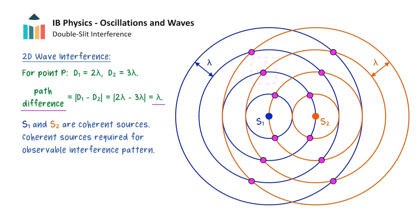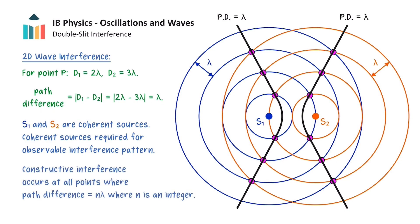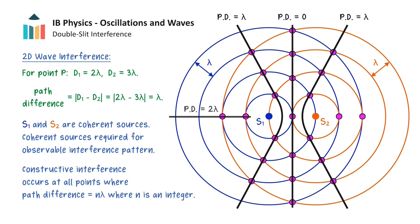In two dimensions, we can sketch these two black curves that show all the points which have a path difference of one wavelength. In general, constructive interference occurs at all points where the path difference is equal to an integer multiplied by the wavelength. This line shows all the points where the path difference is zero, and these two lines represent points with a path difference of two wavelengths, so they all represent regions of constructive interference.